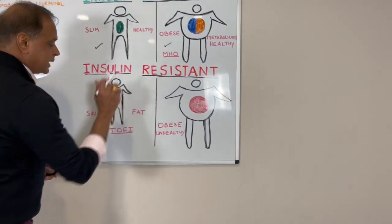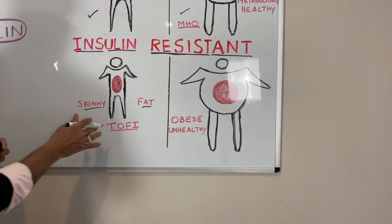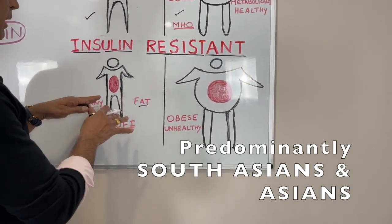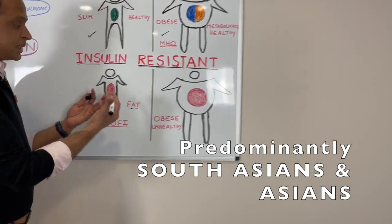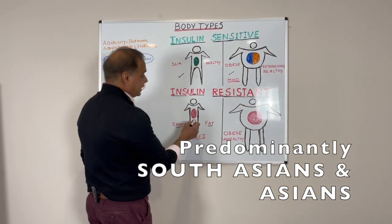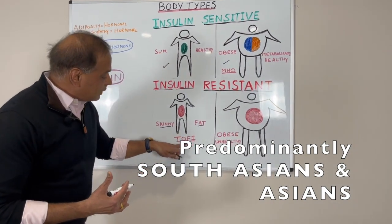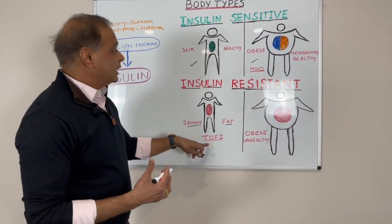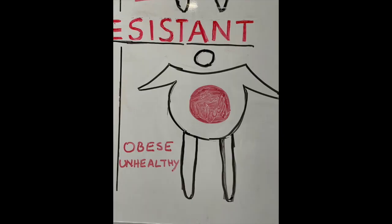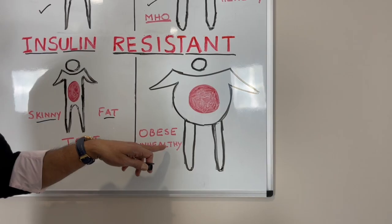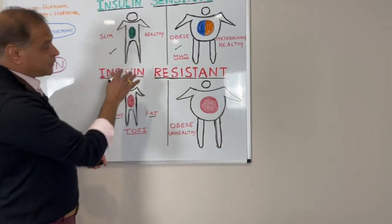Moving to the insulin-resistant type, we have the skinny people and the skinny fat people. This is a very interesting class — we may think skinny people are healthy, but they are actually the most metabolically unhealthy. The glucose, lipids, and other energy substrates flow back into the system; they cannot hold much fat. These people get sick with diabetes, cardiac disease, and various other complications. They are called 'thin outside, fat inside.' The other insulin-resistant category is the typical obese and unhealthy, diabetic category — people with all the complications of obesity, which is what we see predominantly.